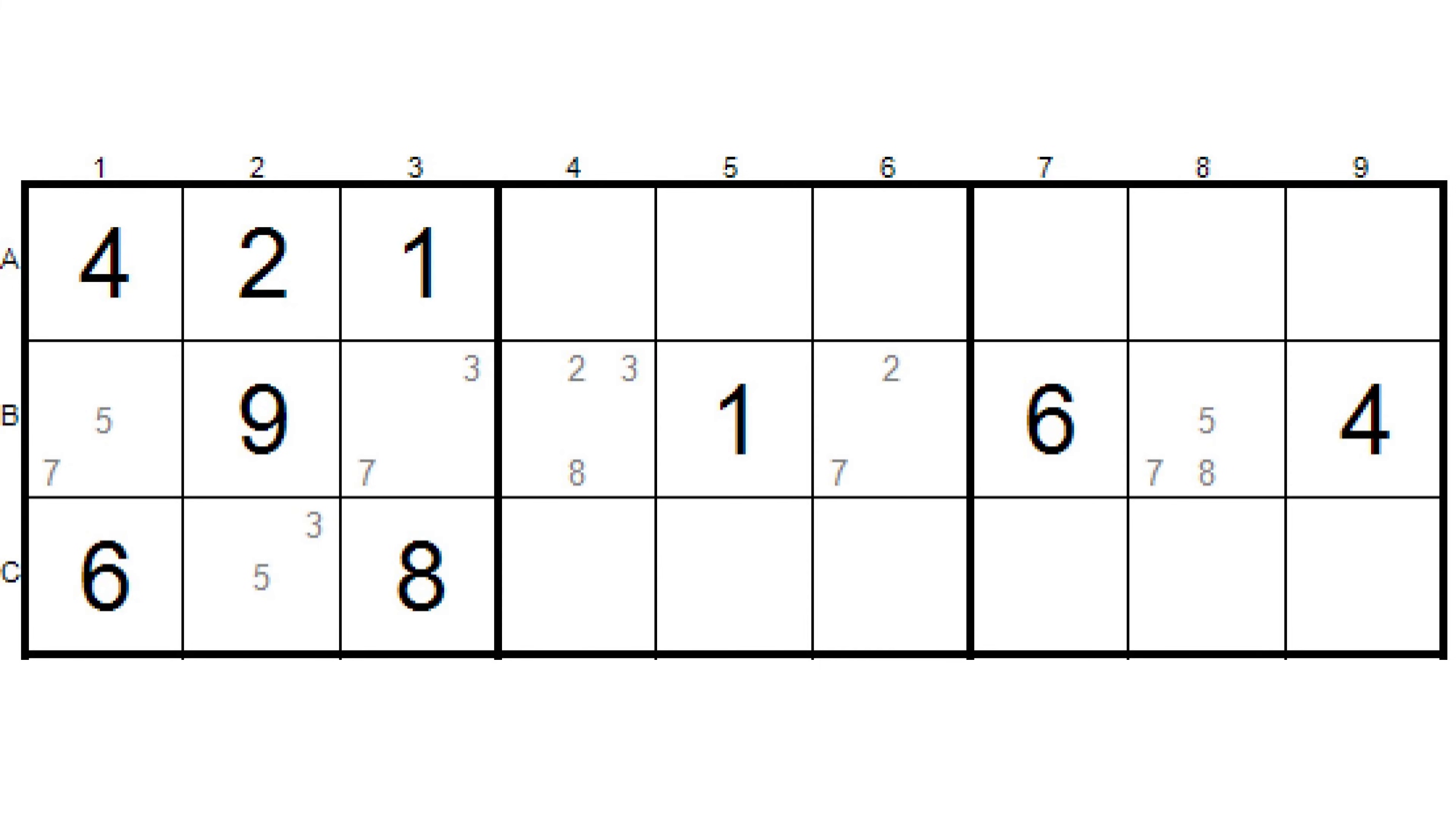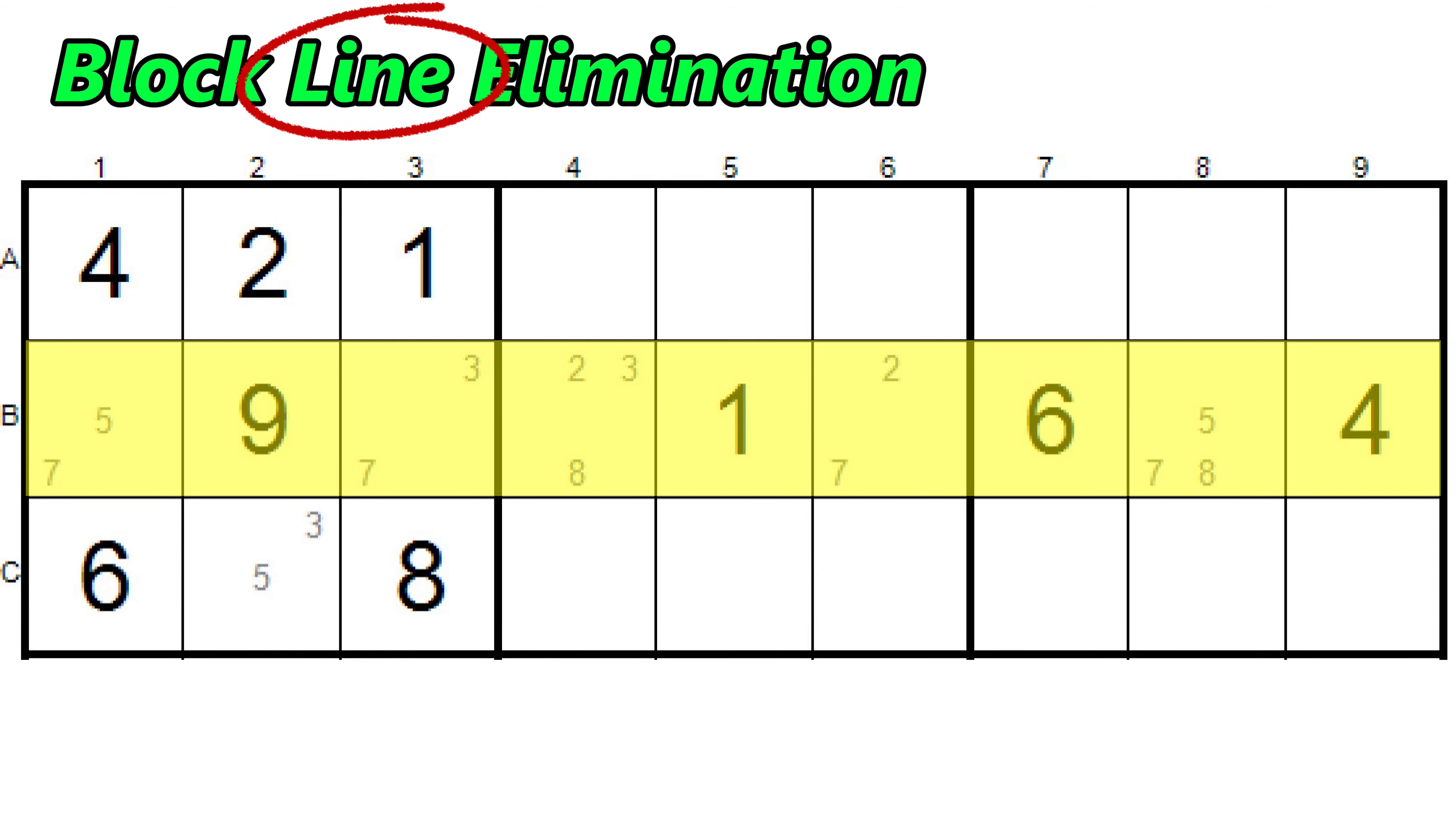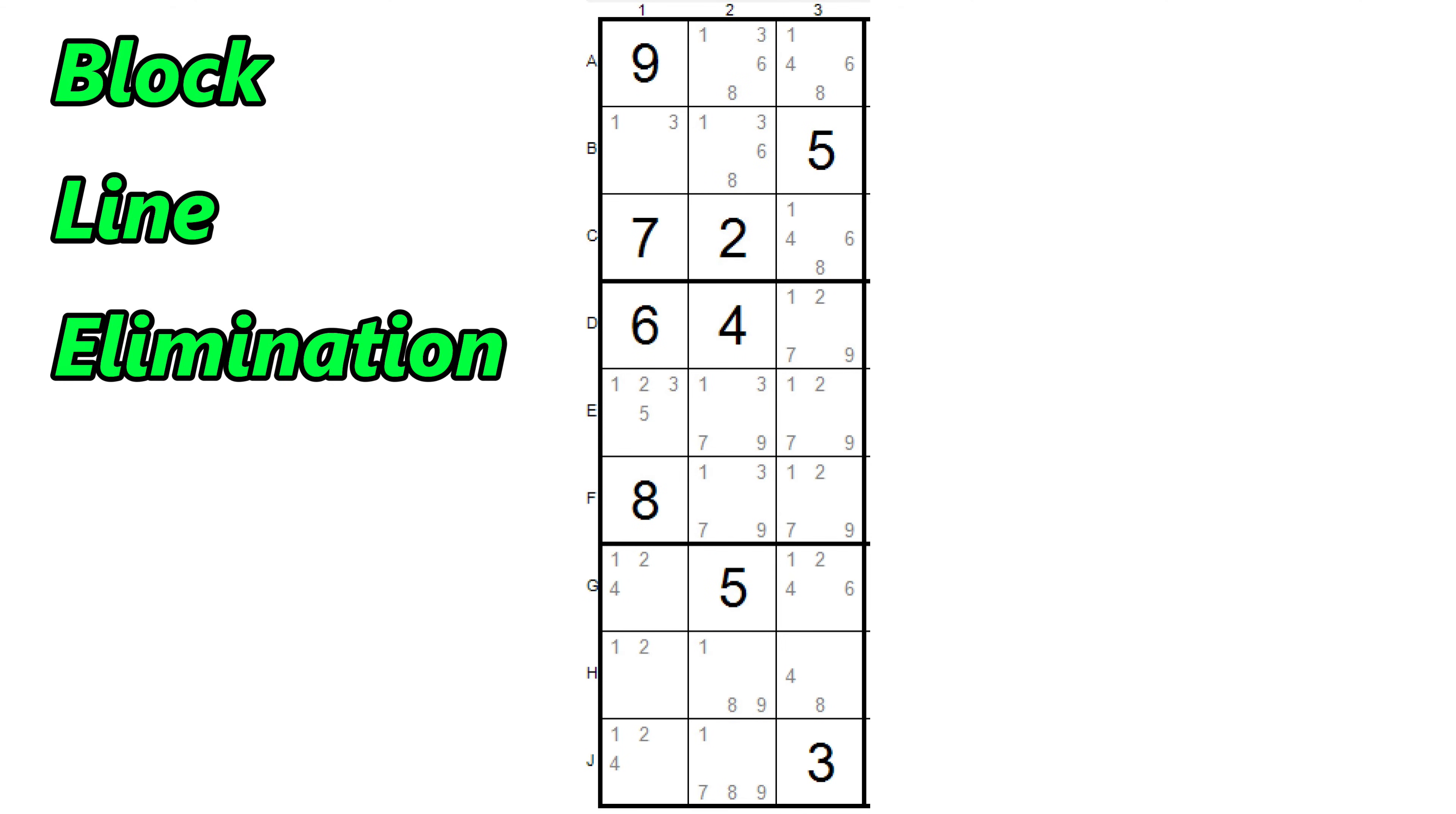Now you can see why sometimes this is called block line elimination. The locked 7 candidates are in the block, block 1, and then we can use that to eliminate all the candidates in that same line. It's a row in this case, but it could also have been a column. If you think of a row as a line going across and a column as a line going down, then you can see why this is called block line elimination.